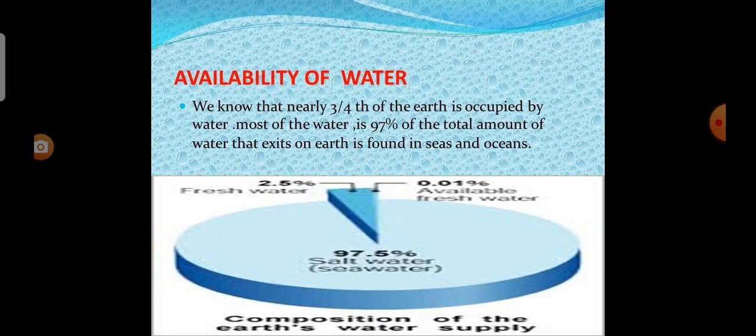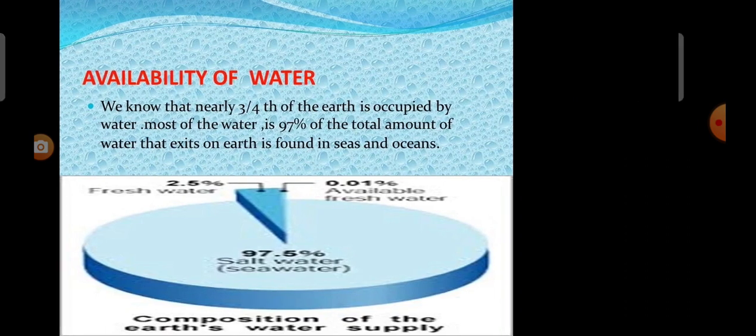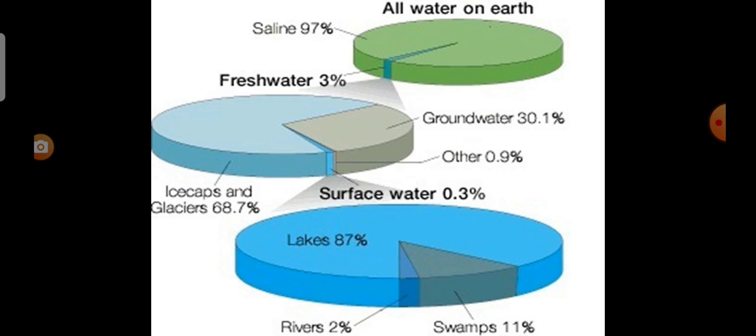Now we see about the availability of water. We know that nearly three-fourths of the surface of earth is covered with water. Most of the water, that is 97% of total amount of water that exists on earth, is found in seas and oceans. Look at the pie chart. Can we drink the water available in sea? No.